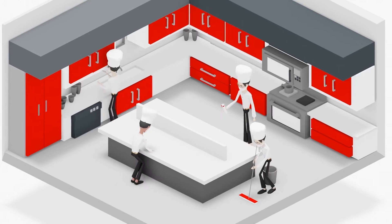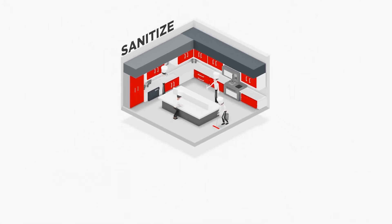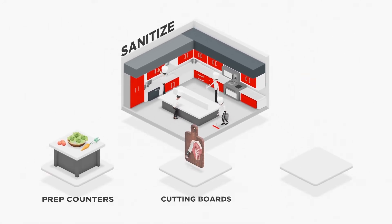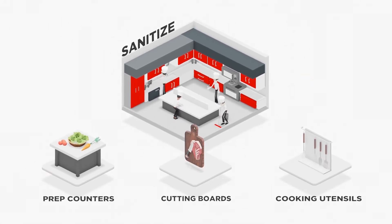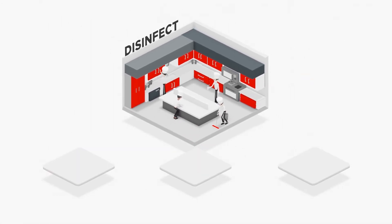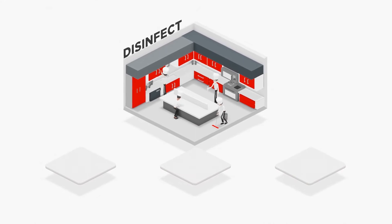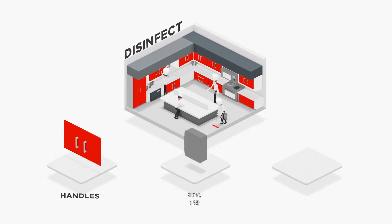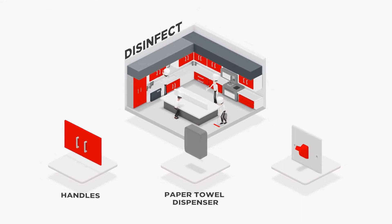In the kitchen, key areas to sanitize include things like prep counters, cutting boards, and cooking utensils, while disinfectants should be used on the non-food contact surfaces like handles, paper towel dispensers, and light switches.